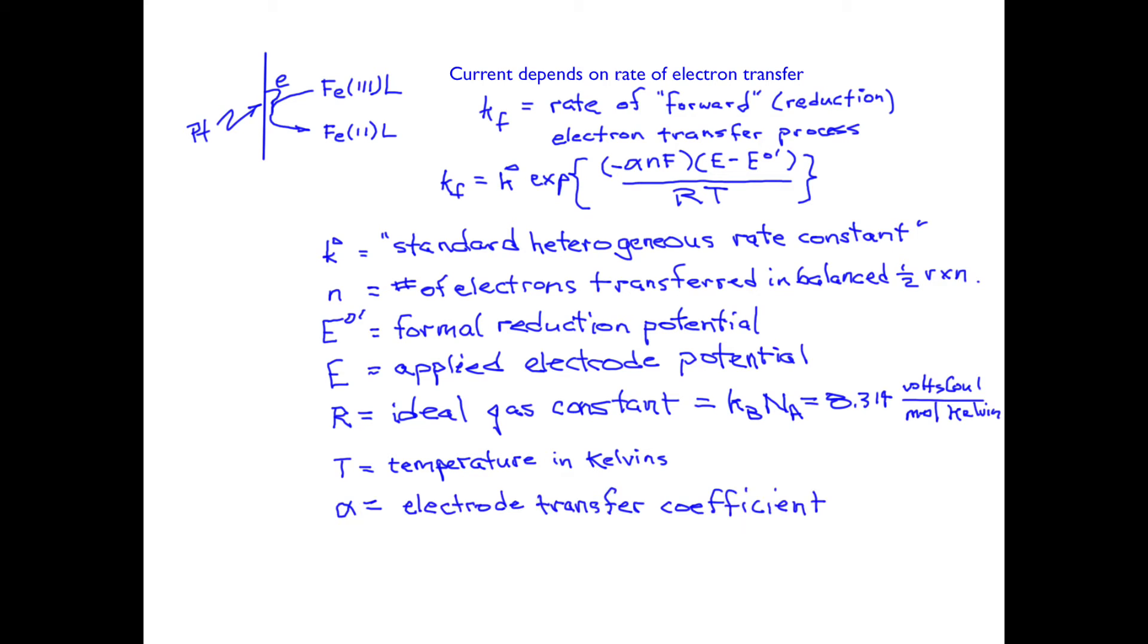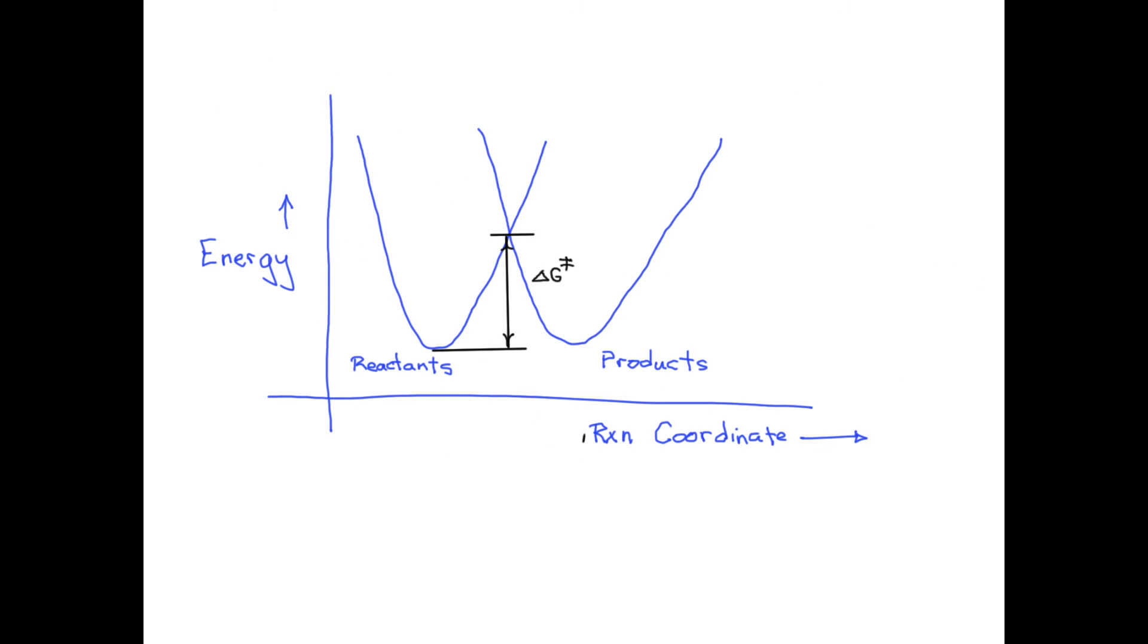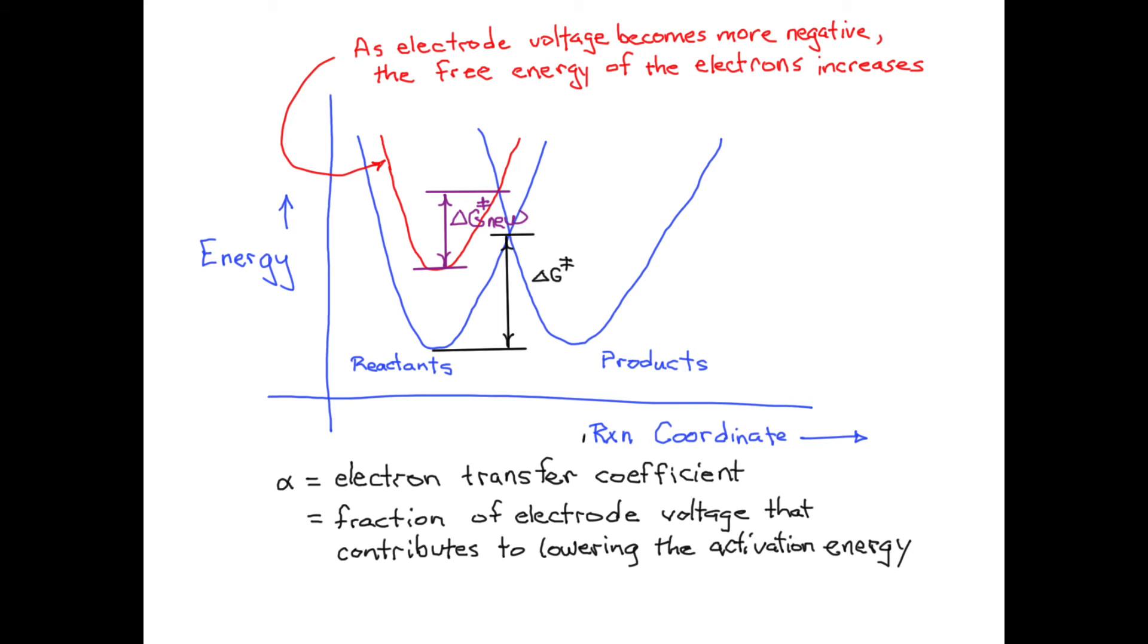The alpha value is the electron transfer coefficient. It appears here because not all of the energy that is put into the system in form of the applied voltage goes into lowering the activation energy for the reaction. We think about the rate of a reaction being controlled by the activation energy barrier formed by the two energy wells that describe the reactants and products. When we apply a more negative potential to the electrode, we are raising the free energy of the electrons in the electrode. So the potential well for the reactants shifts up. The energy barrier gets smaller, but not by the same amount of energy that we put in. It's discounted. The energy barrier is lowered only by a fraction of the applied voltage. Alpha is that fraction. Its value is between 0 and 1, usually about 0.5.